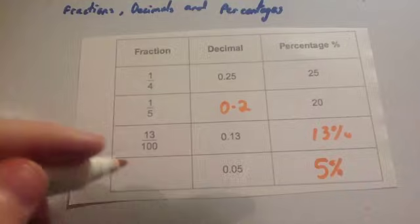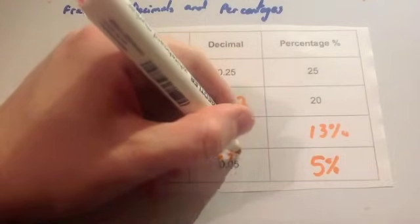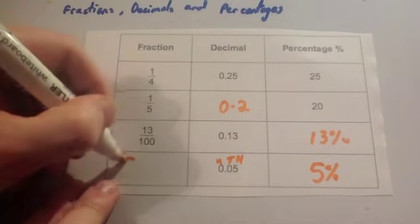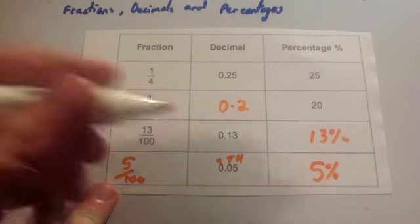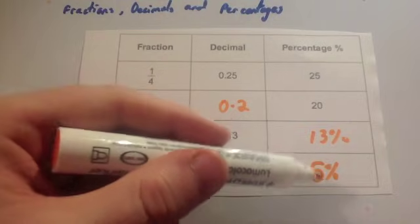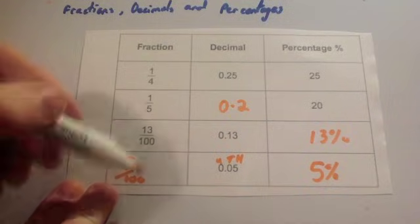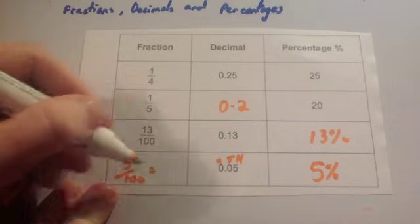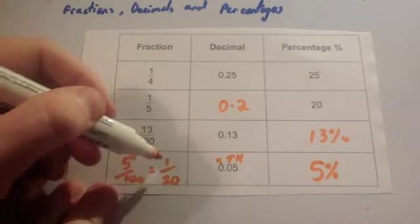And then you can either do the fraction one of two ways. You could say, well, there's no units. Remember the columns: units, tenths, hundredths. So you've got 5 hundredths, so that would be 5 hundredths, like that. And then you'd cancel it down. Likewise, 5% means 5 out of 100, so that would be 5 hundredths as well. Now you need to cancel this down. You could divide both of these by 5. 5 goes into 5 once, and 5 goes into 100 20 times. So that would be 1 20th.